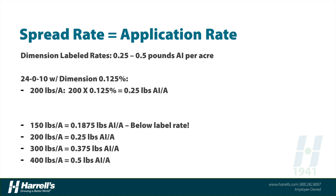With sparged fertilizers, the spread rate equals the application rate. The example I'll use is Dimension 0.125% — meaning this 24-0-10 fertilizer is sparged with 0.125% Dimension. At 200 pounds per acre times 0.125%, applying 200 pounds of this fertilizer per acre achieves 0.25 pounds of active ingredient per acre. The Dimension label rates are 0.25 to 0.5 pounds of active ingredient per acre, so this 200 lb/acre spread rate provides the low label rate of Dimension.